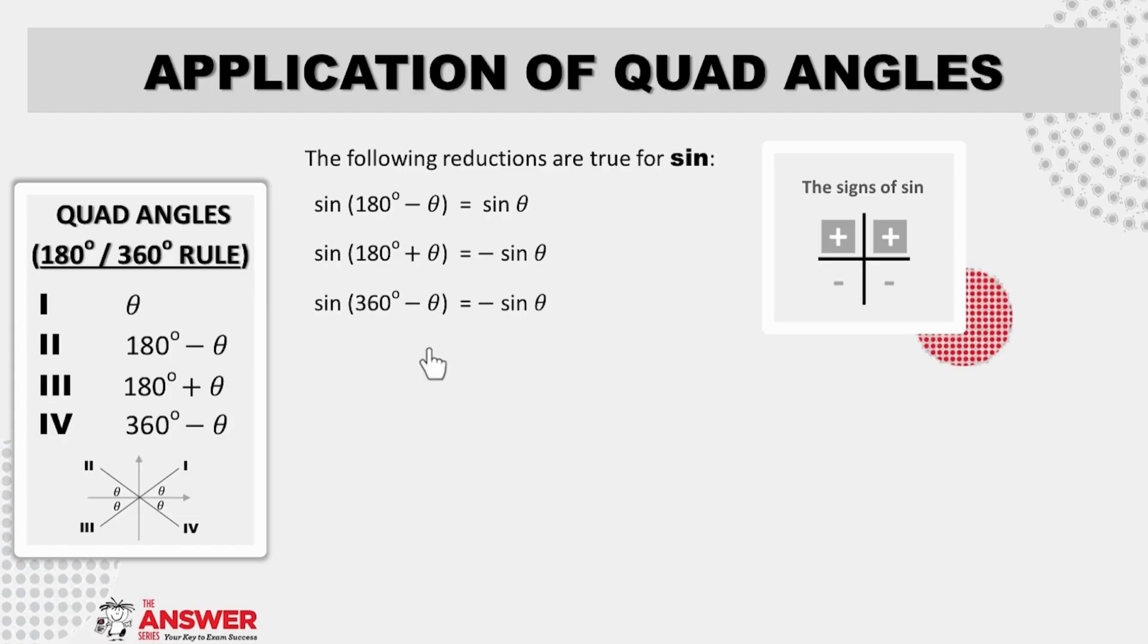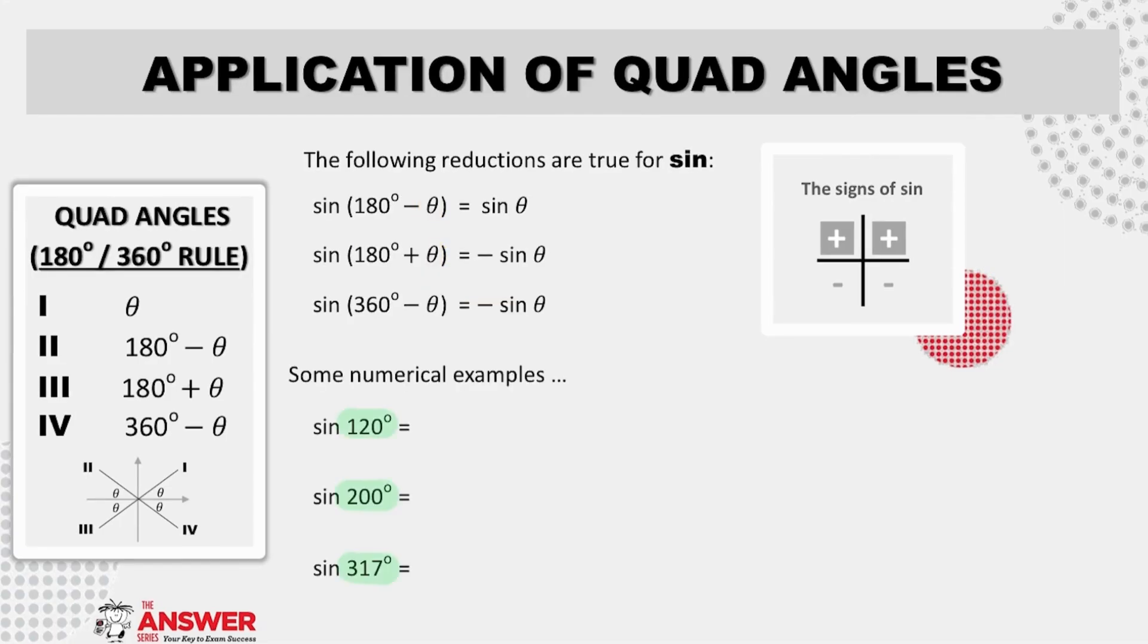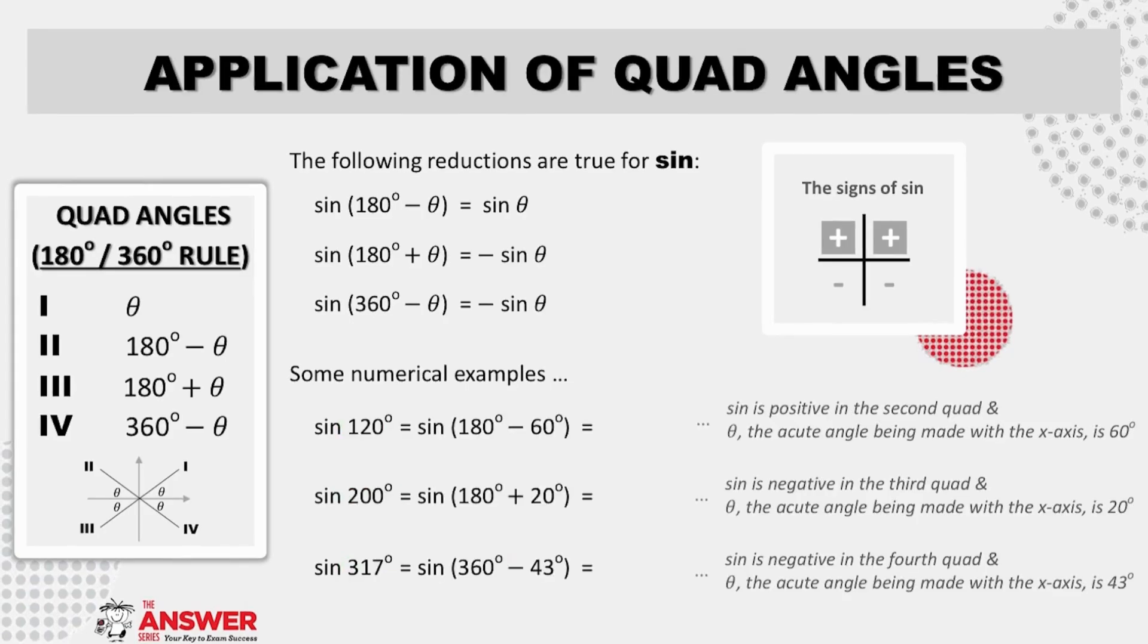Sometimes we reduce with unknowns in the angle, in this case theta was used. And other times our angle has a numerical value. Let's have a look now at the necessary steps for this scenario. You will soon start getting into the rhythm of always considering two aspects each time you reduce. The one aspect is which quad the angle lies in, so that you can establish the sign of the ratio when reducing. And the other is calculating the value of the reference angle, which is the acute angle being formed between the angle arm and the X axis. You will see we've done some of the thinking here for you already, but pause for a moment to give completing these three numerical examples a try before moving on to check your work.